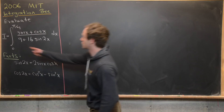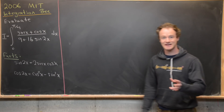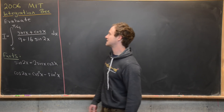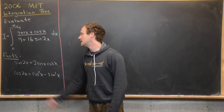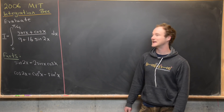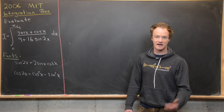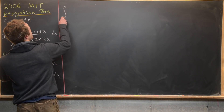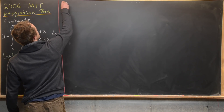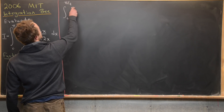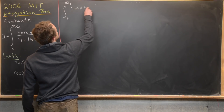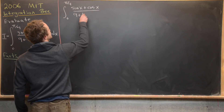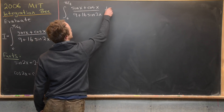So we've got this integral, which I'll call I, and it's a definite integral from 0 to pi over 4 of cosine of x plus sine of x over 9 plus 16 sine 2x dx. Let me copy this up here: the integral from 0 to pi over 4 of sine x plus cosine x over 9 plus 16 sine 2x dx.